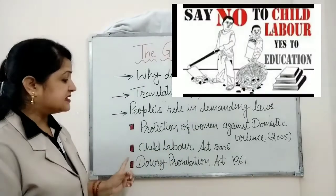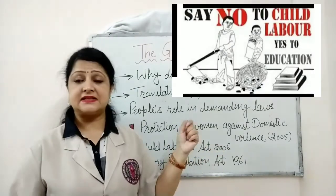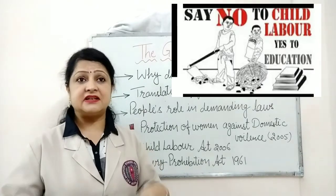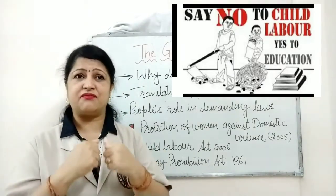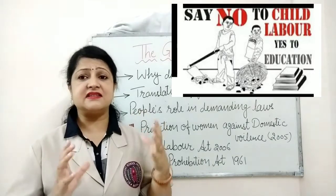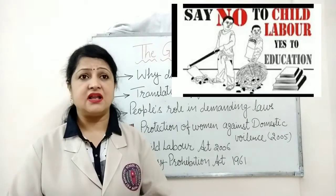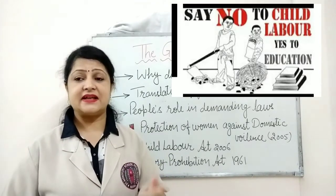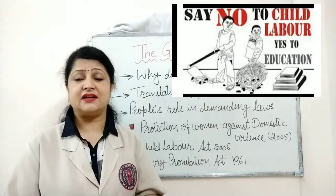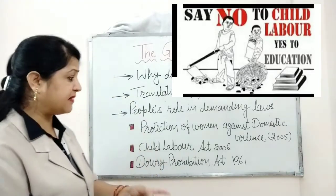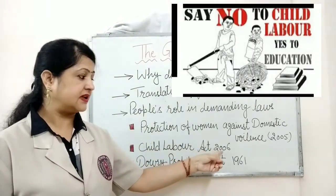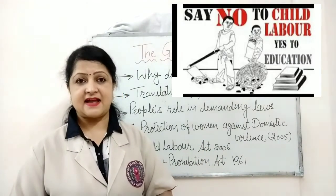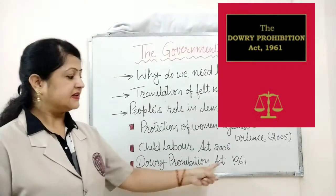The next law is the Child Labour Act, 2006. This Act was enacted to ensure that children are prevented from being put into difficult situations and hazardous labour work at a tender age — a situation in which poverty was forcing people to send children to work rather than to school to get an education and grow up in a healthy environment. The government made this law to prevent children from being put into hard and difficult work.